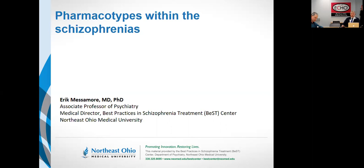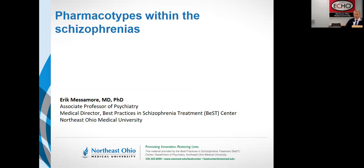Rather, the data — all kinds of data, including the pharmacological data I'll discuss today — pretty much pound on the table making you think that we're looking at a number of different diseases that have broadly similar symptoms. That's a point of great confusion both in medicine and research, as well as in patient care. But thinking about schizophrenia as a plural disease is a helpful framework.